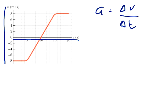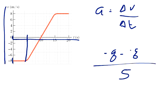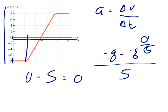Where does velocity change? From the first interval, from zero seconds to five seconds, our velocity stays at negative eight — negative eight minus negative eight — over five seconds. So it changes zero over five, which equals zero. The average acceleration from zero to five seconds is zero.